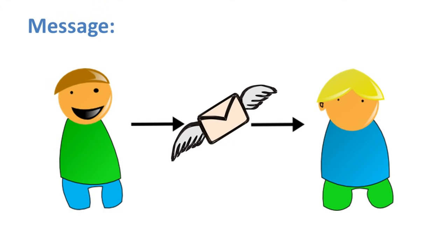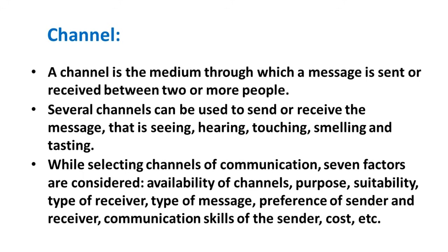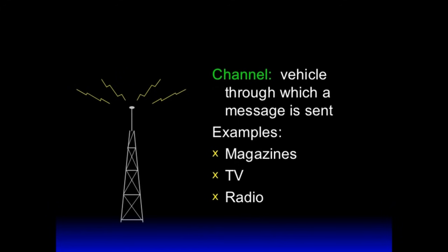For the flow of a message, a certain channel is needed — whether in the form of any device or media such as air. A channel is the medium through which a message is sent or received between two or more people. Several channels can be used: seeing, hearing, touching, smelling and tasting. While selecting a channel, several factors are considered: ability of channel, purpose, suitability, type of receiver, type of message, preference of sender and receiver, communication skill of the sender, and cost. A channel can be a tower, magazine, TV or radio.